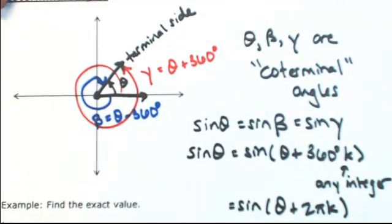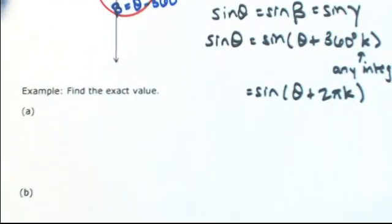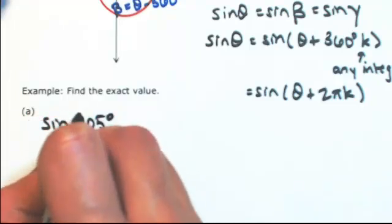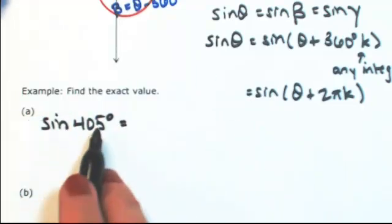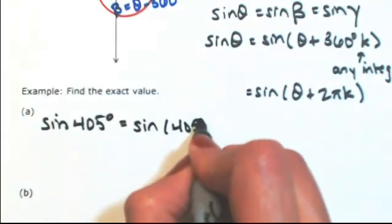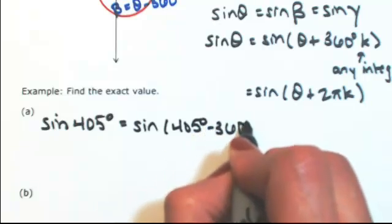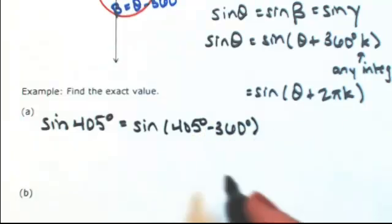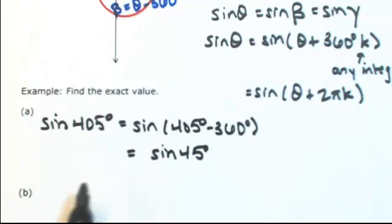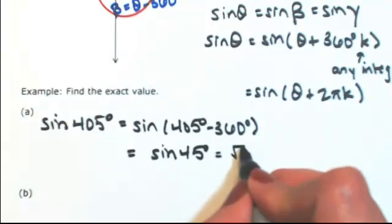Let's look at some examples involving coterminal angles. Let's say I want to find the sine of 405 degrees. Since 405 degrees is more than 360, let's take away 360. So we're going to end up in the same spot as 45 degrees. So the sine of 405 degrees is square root of 2 over 2.